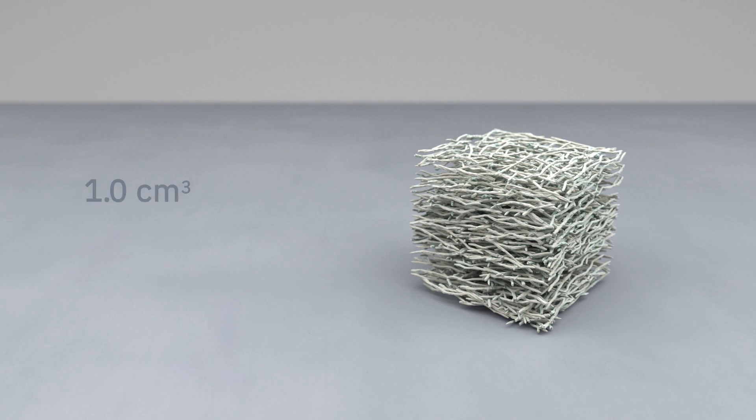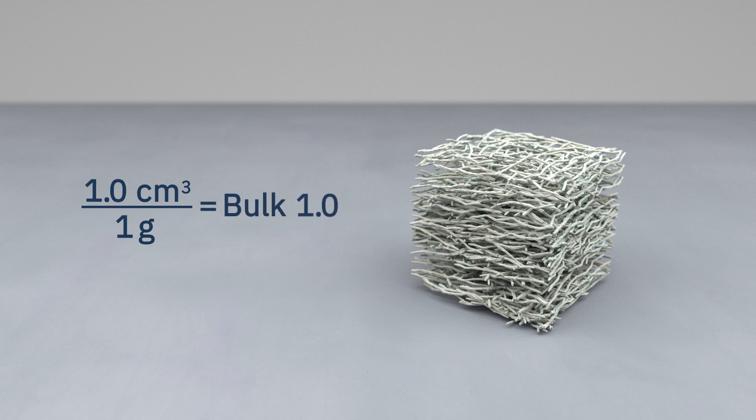Paper bulk is measured in cubic centimetres per gram, and states how big the volume one gram of paper has.